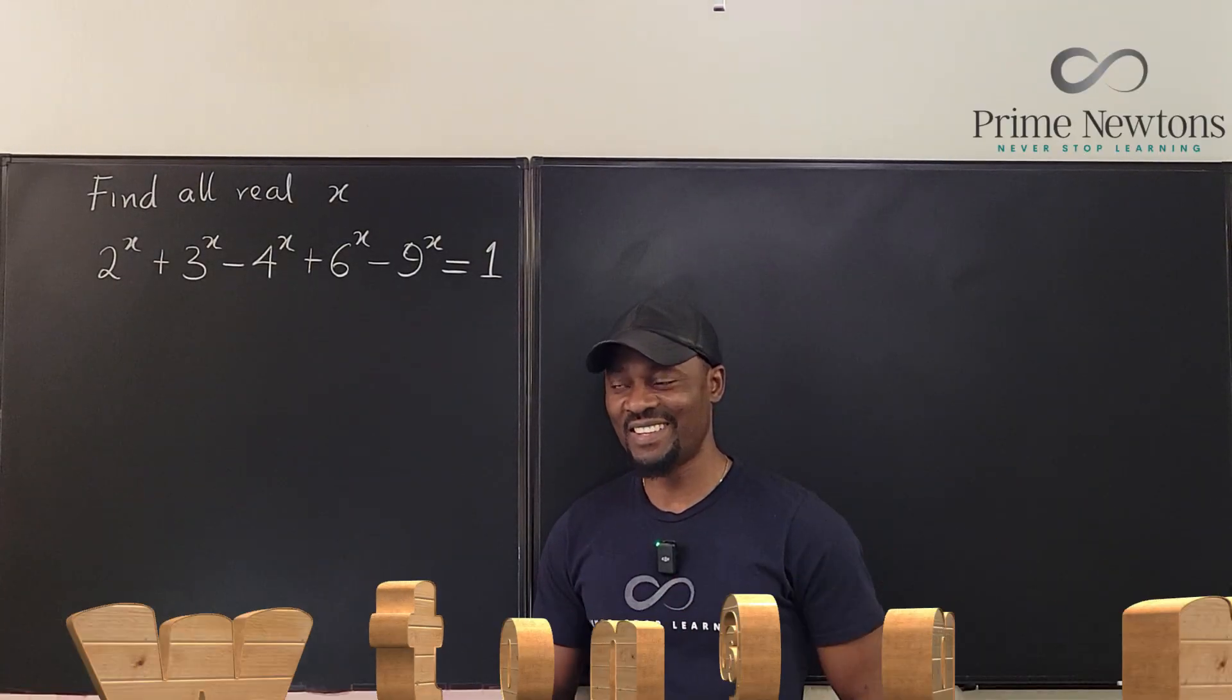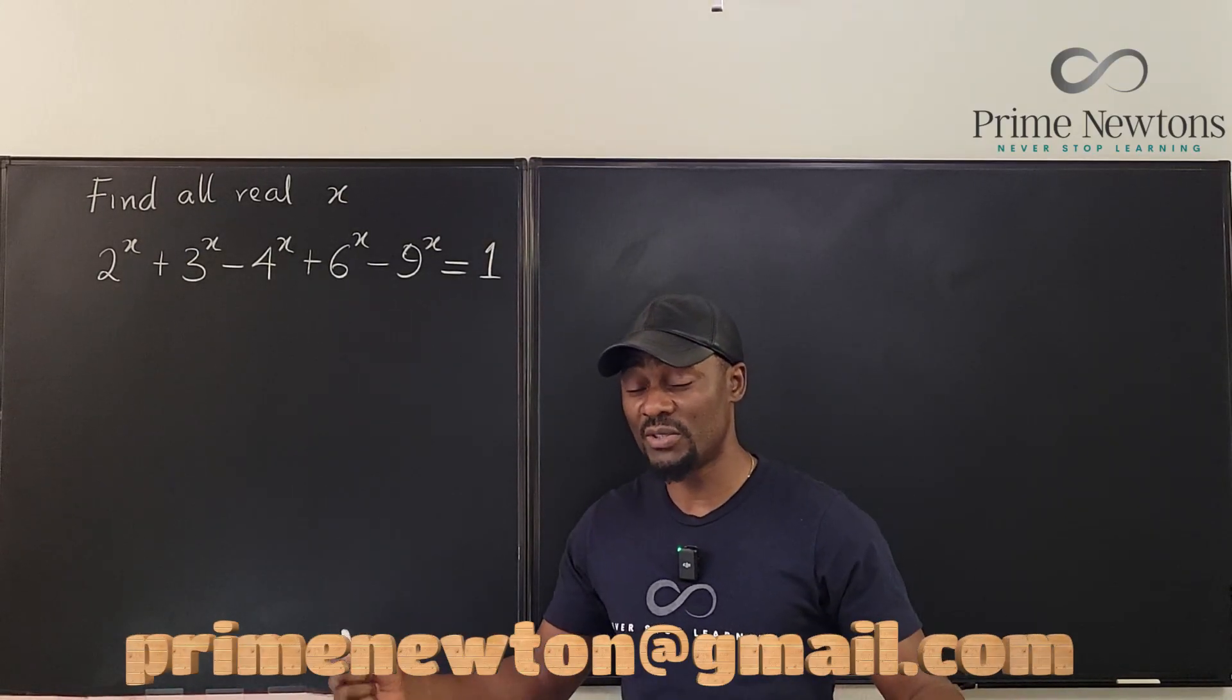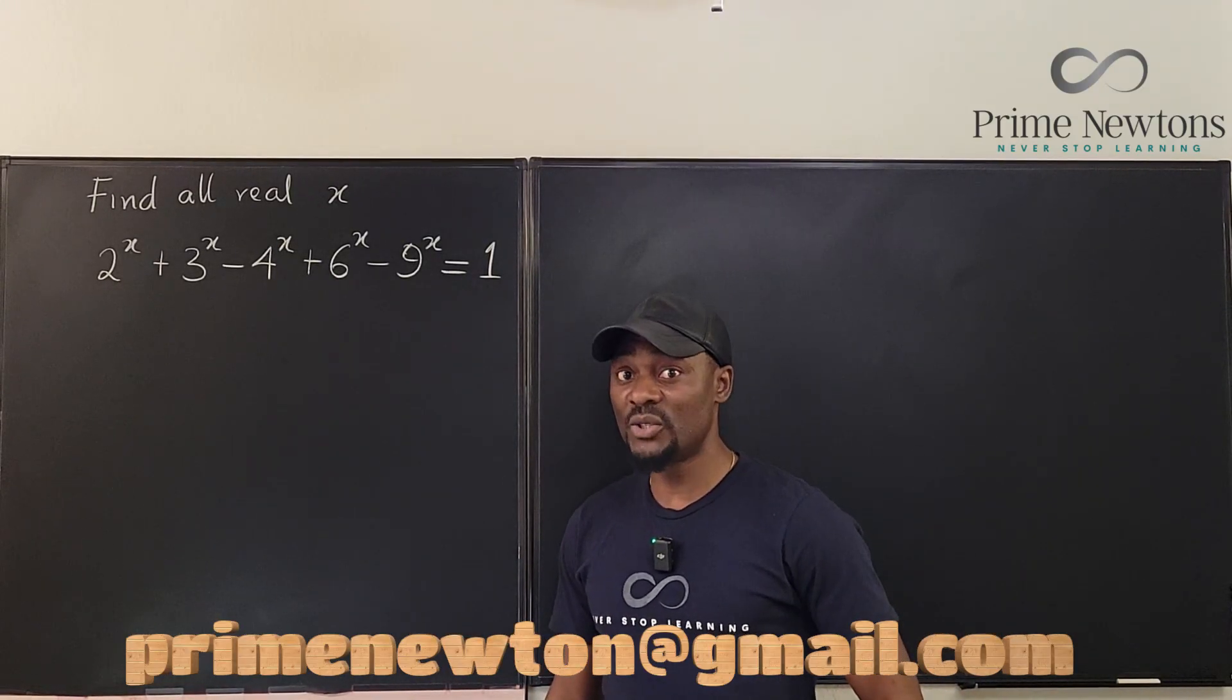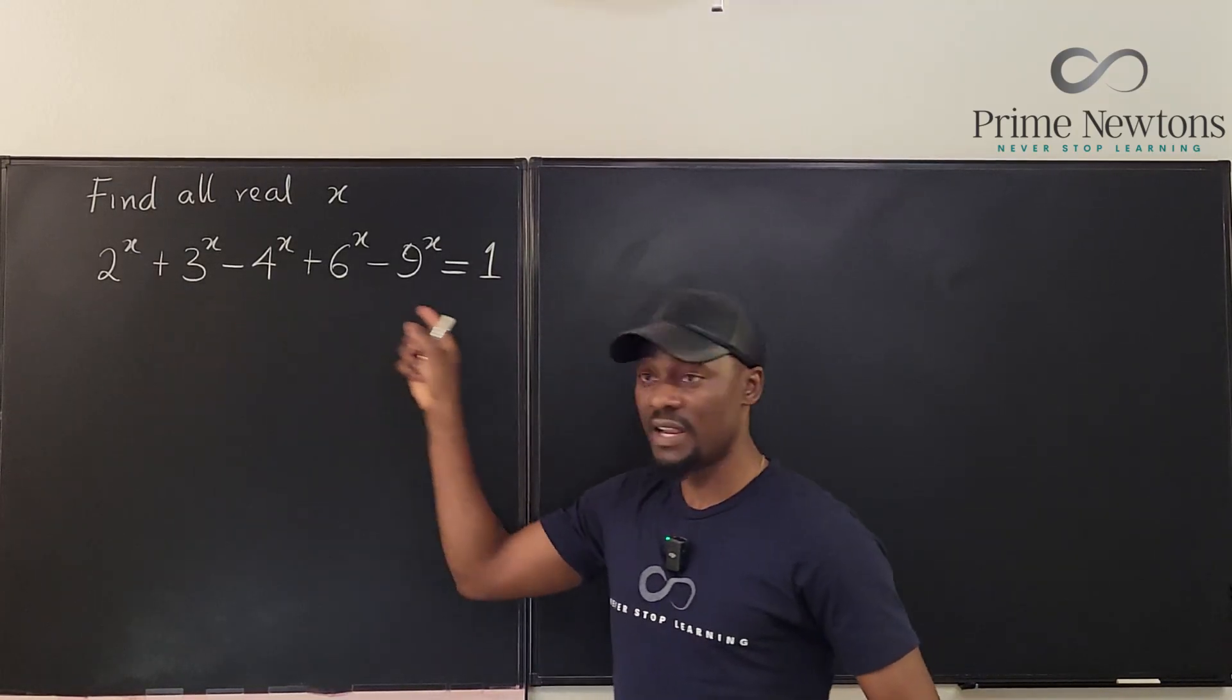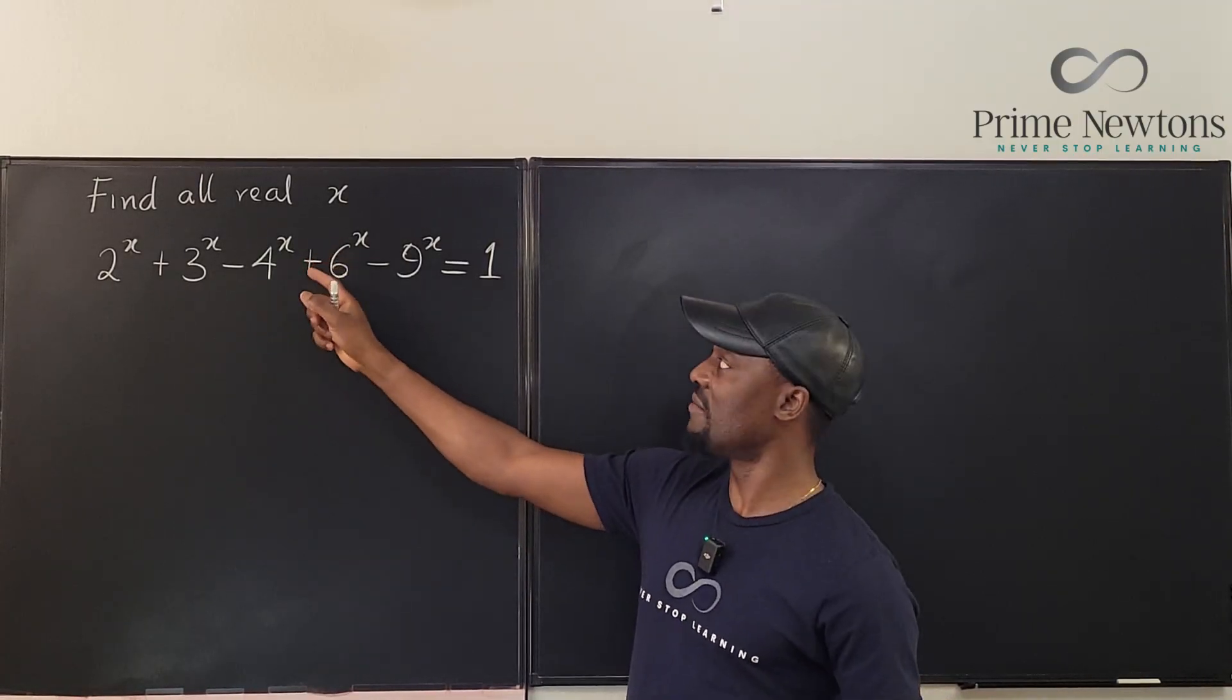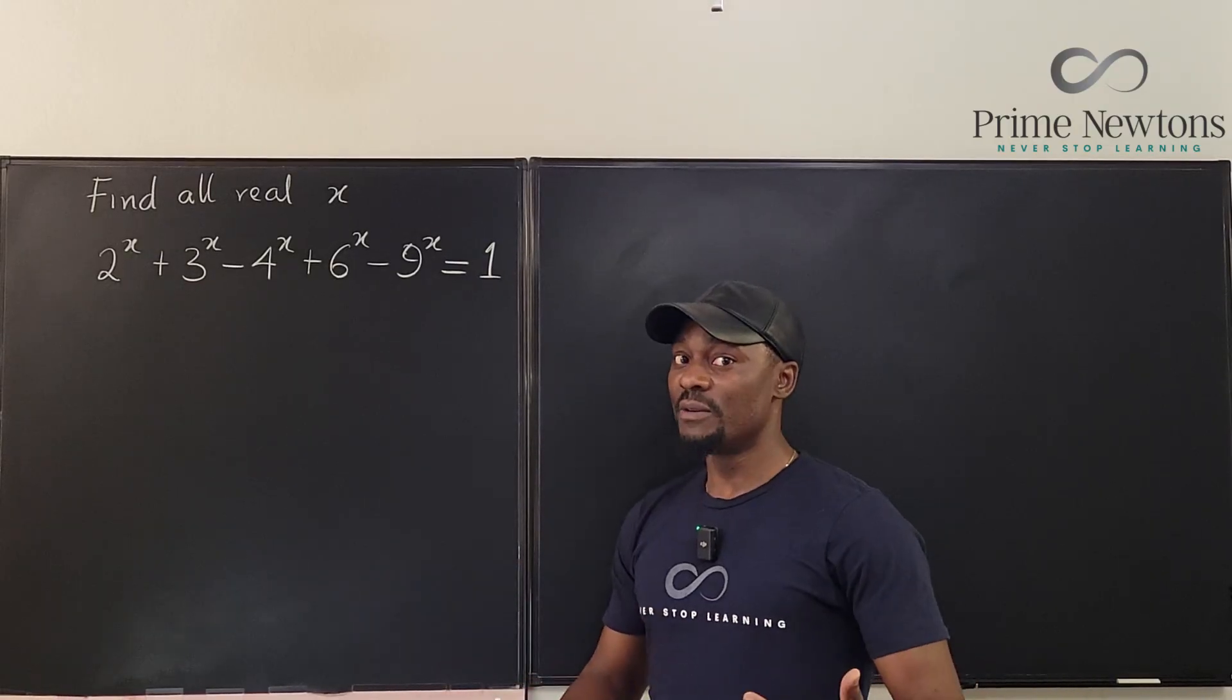Welcome to another video. This beautiful problem is from a Korean mathematics competition from the year 2000, so this question is 24 years old. The mission is to find all real values of x that satisfy this equation where you have 2^x + 3^x - 4^x + 6^x - 9^x = 1.